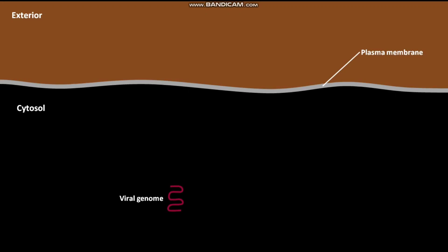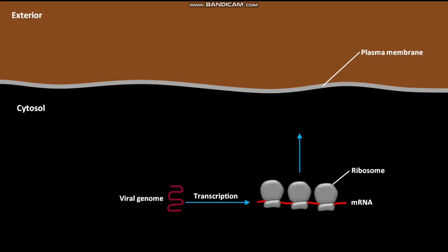The viral genome undergoes transcription to produce mRNA. The mRNA then, with the help of host cell ribosomes, undergoes translation to produce viral protein. This viral protein acts as an antigen for the host cell or target cell.